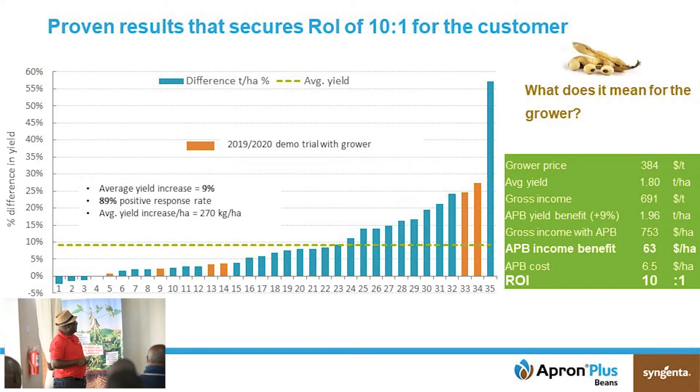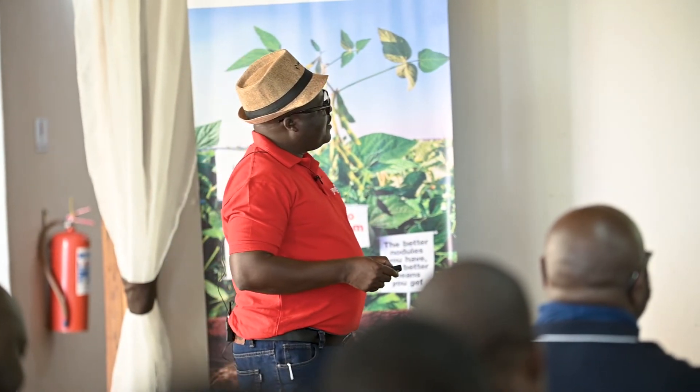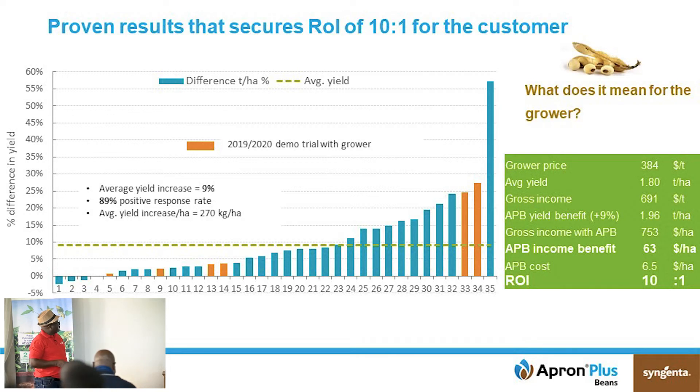Looking at the average yield — these results are from South Africa — the average yields they were getting in South Africa is around 9%, which is consistent with the results from Zambia of around 10%. So on average, once you use this product alone, you get a huge benefit of around 9–10%. For our South African colleagues, the grower price is $384, with an average yield of 1.8 tons per hectare for the non-treated, giving a gross income of $6.91.